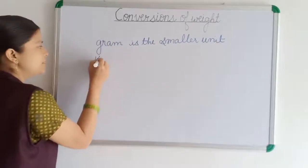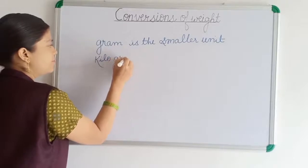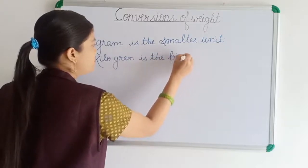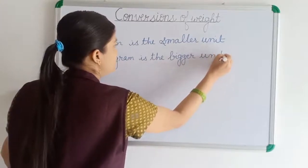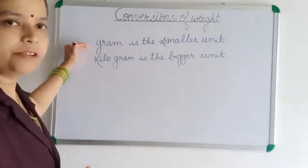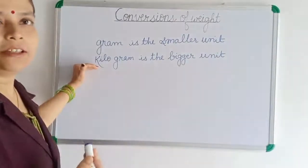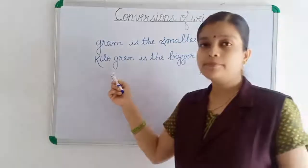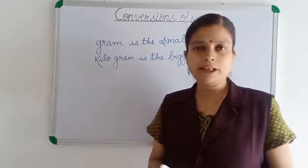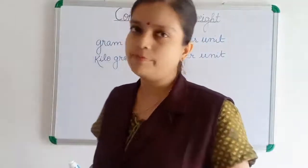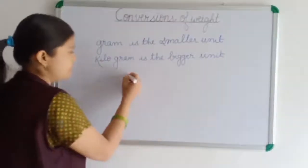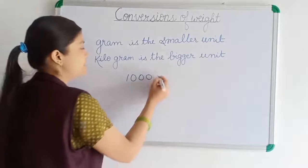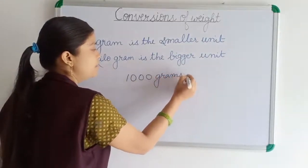And kilogram is the bigger unit. So when we have to measure any lighter object we use gram, and for heavier objects we use kilogram. Now in this topic we will learn how to convert gram into kilogram and kilogram into gram. For this, first we have to know one relationship between them: one thousand grams is equal to one kilogram.